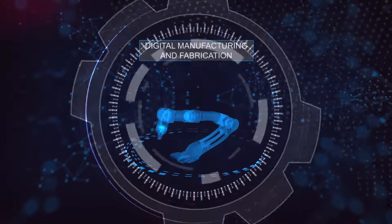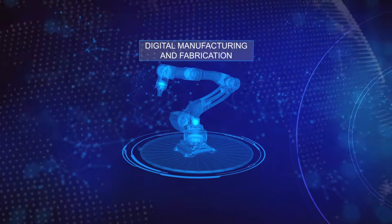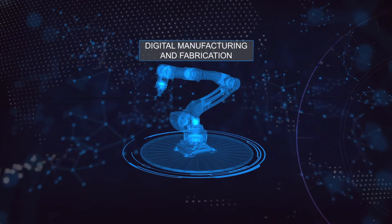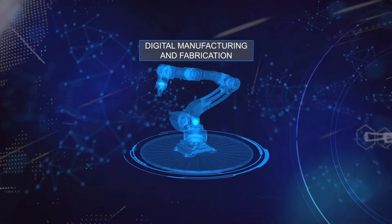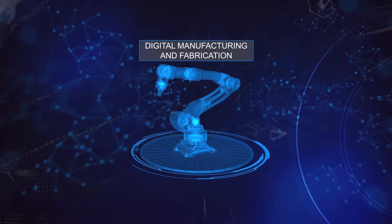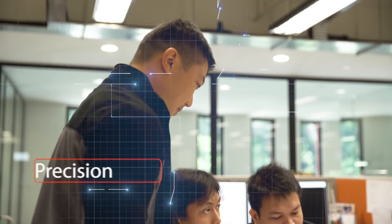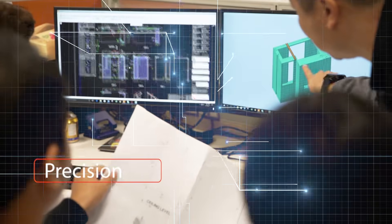Digital manufacturing and fabrication involves the integration of design with the automated off-site production of building components. The fabricator uses the digital model for production planning.